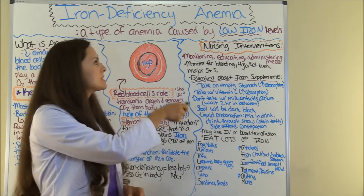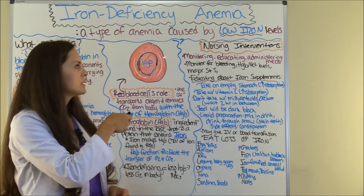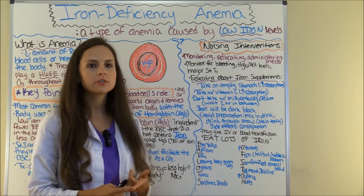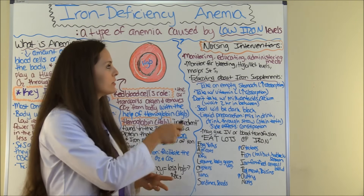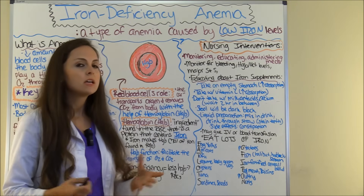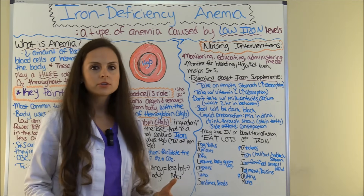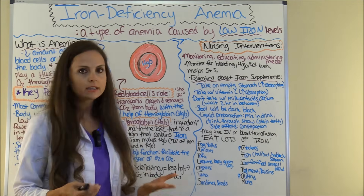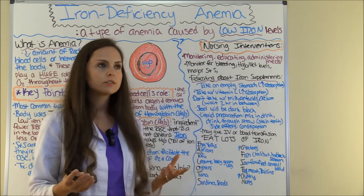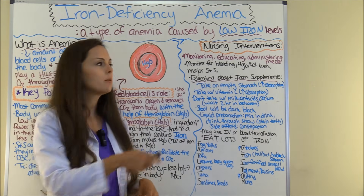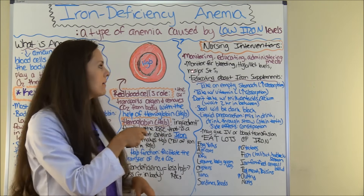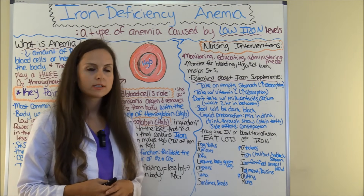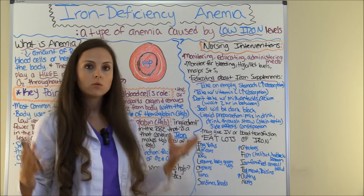Now to nursing interventions. As a nurse, you're going to monitor, educate, and administer meds. For monitoring, you'll be watching for any bleeding — since that can contribute to iron deficiency anemia — and monitoring hemoglobin, hematocrit levels, and the major signs and symptoms to see if they are getting worse.